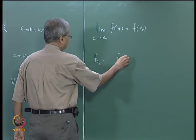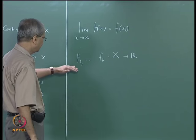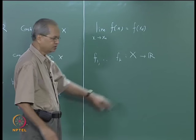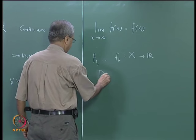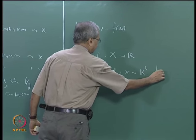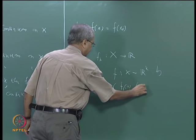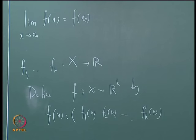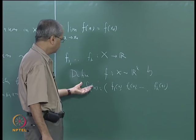Suppose these are k functions from x to R. Then I can construct what is called a vector valued function — a function which goes from x to R^k. Define f from x to R^k by f(x) = (f1(x), f2(x), ..., fk(x)). Then f will be a function from x to R^k. Given k real valued functions, it leads to a function f from x to R^k. Similarly, any function f from x to R^k gives rise to k real valued functions — just as we have seen in the case of sequences.